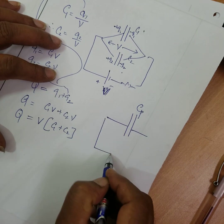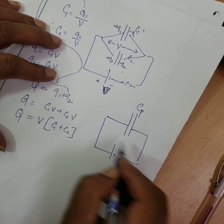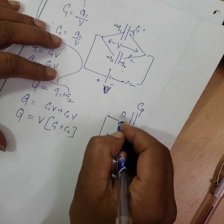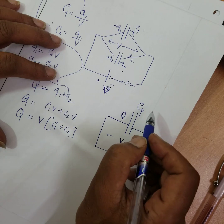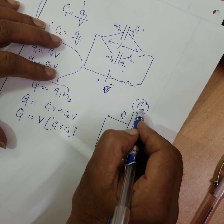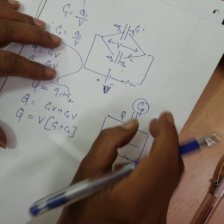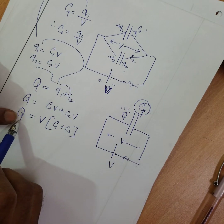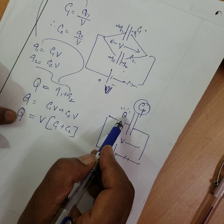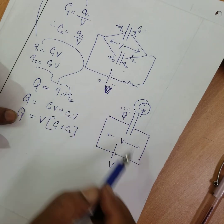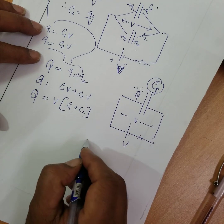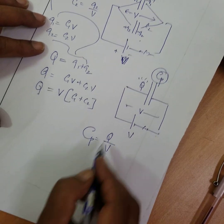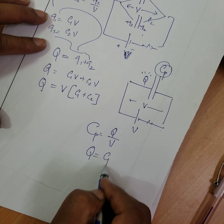Now consider the effective capacitance in parallel. If we apply the same potential V to a single equivalent capacitor, it acquires the same total charge. For example, if the total charge is 200 coulombs with potential V, the effective capacitor also acquires 200 coulombs under the same potential difference. Therefore, effective capacitance Cp equals total charge Q divided by the potential V.